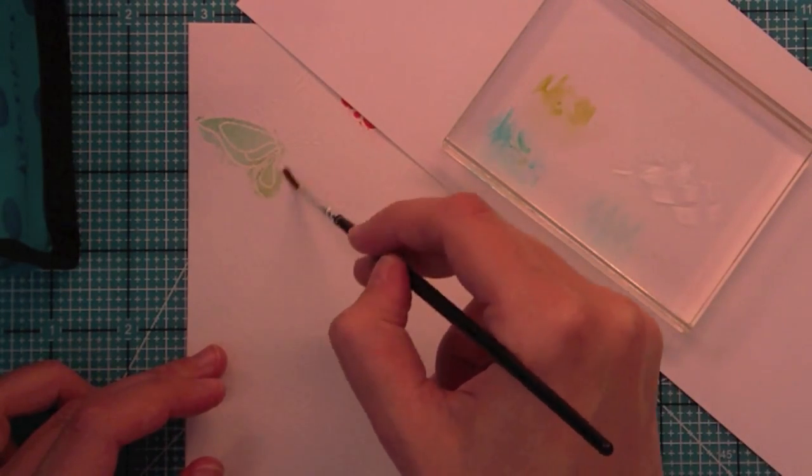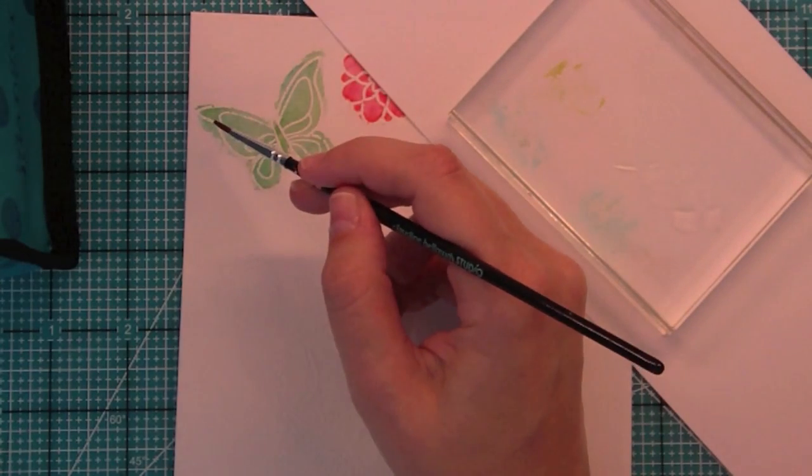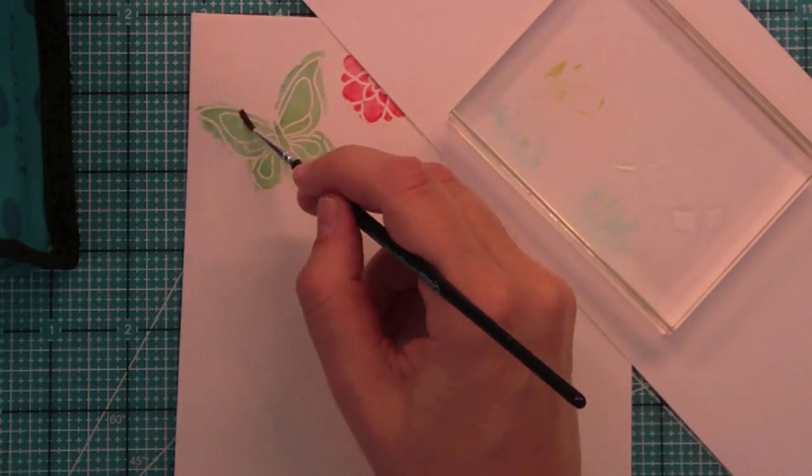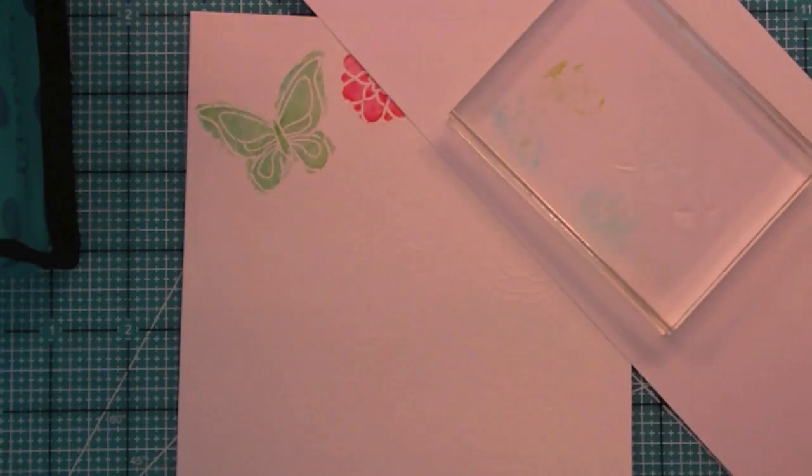If you get too much green somewhere all you have to do is layer some more blue on top or too much blue and layer some green like I just did there. So you can really customize it and play with it and layer until you get a perfect look on your butterfly.